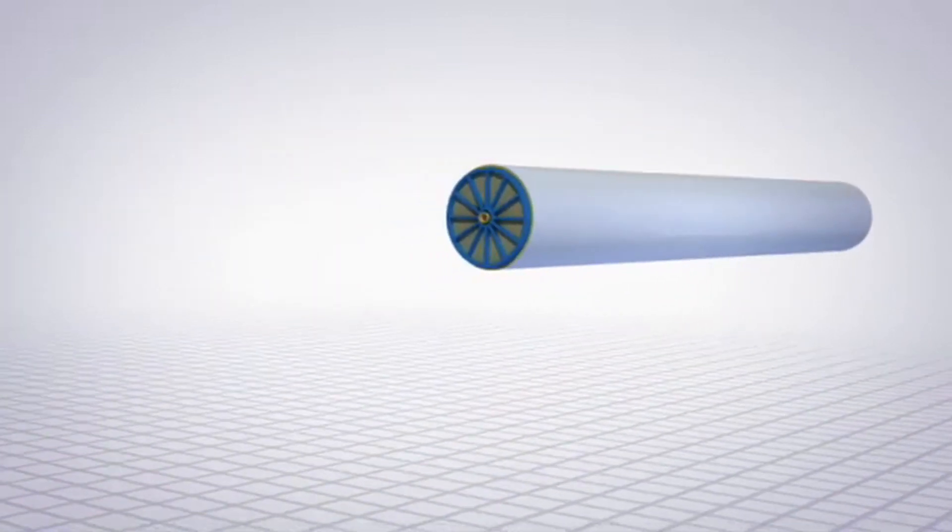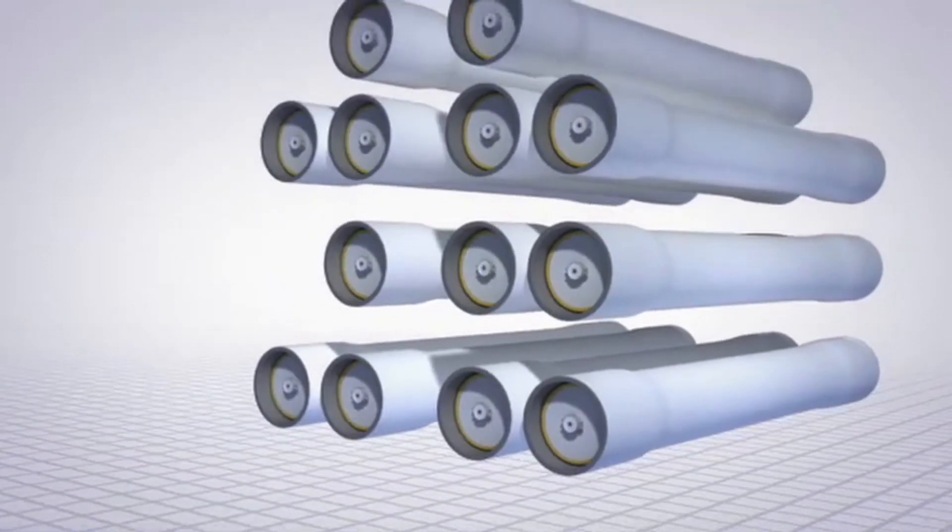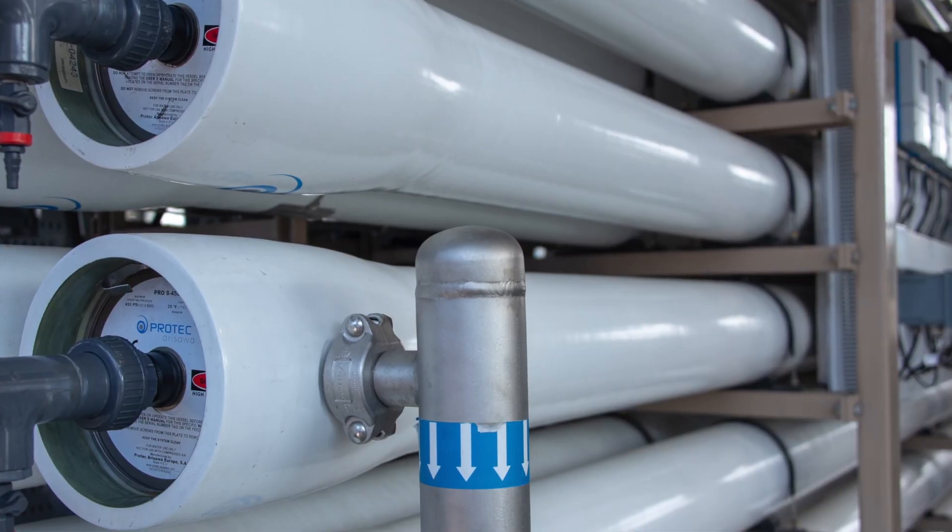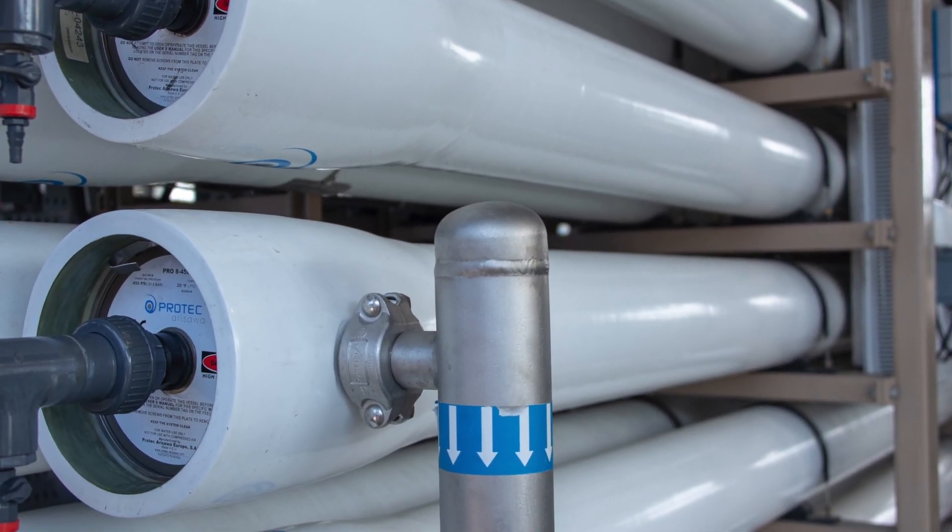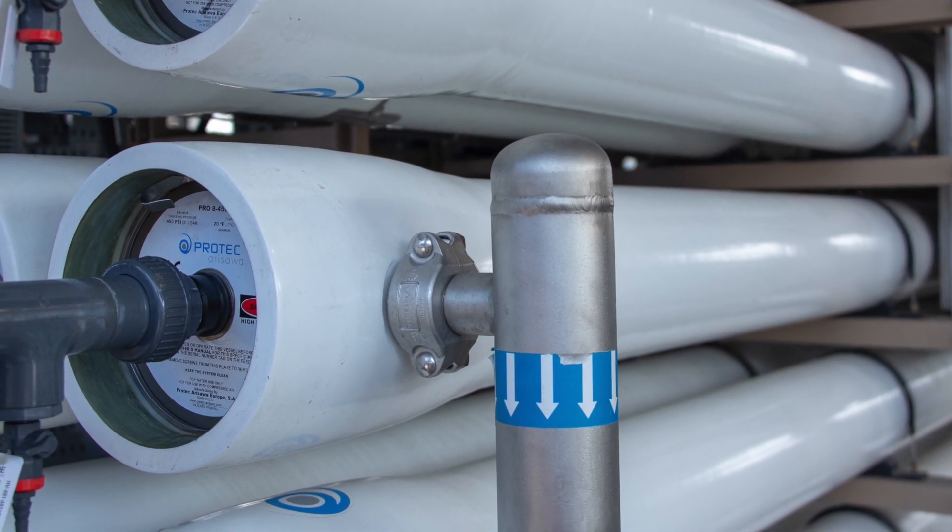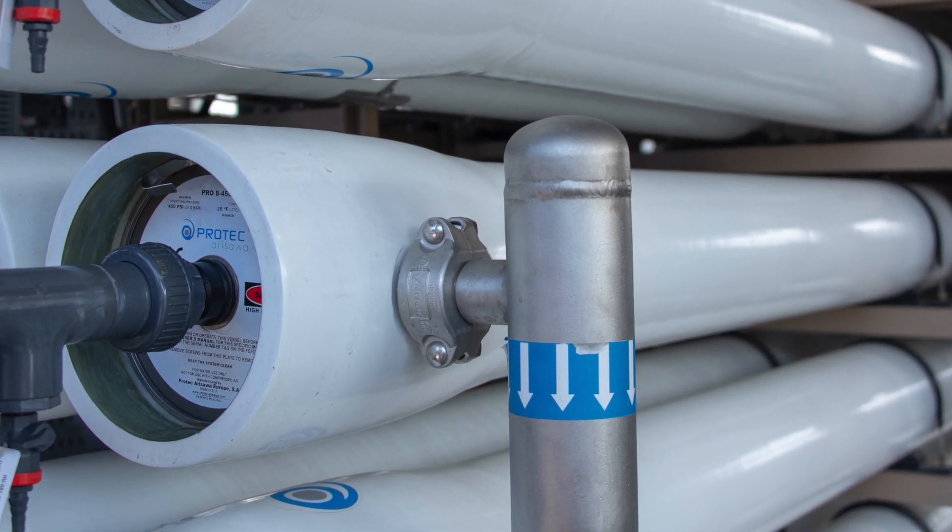The pure permeate water flows out the core tube at one end of the pressure vessel and the concentrate water flows out another outlet. The concentrate water can then flow into other pressure vessels for the same process to happen again so even more pure permeate water can be recovered.